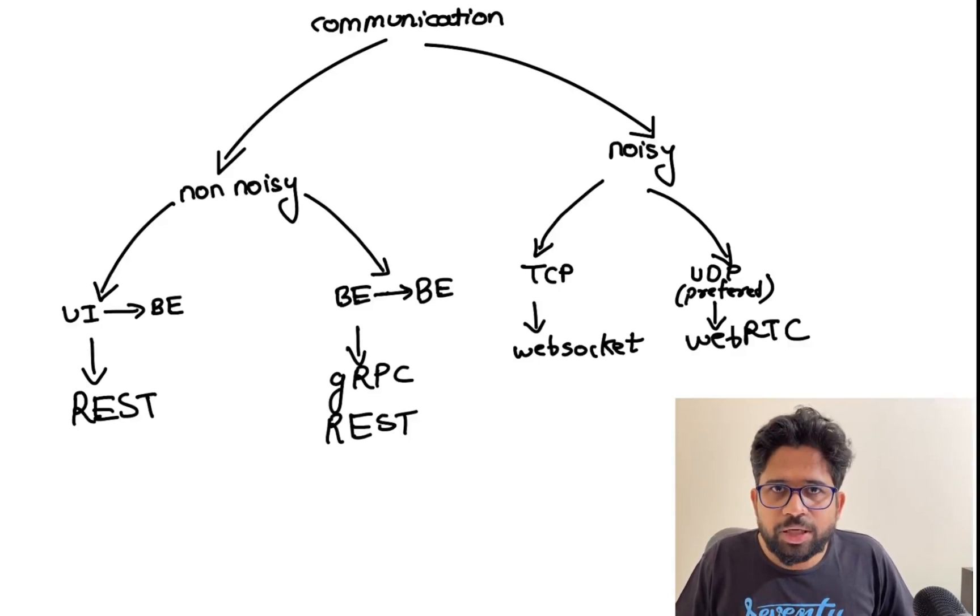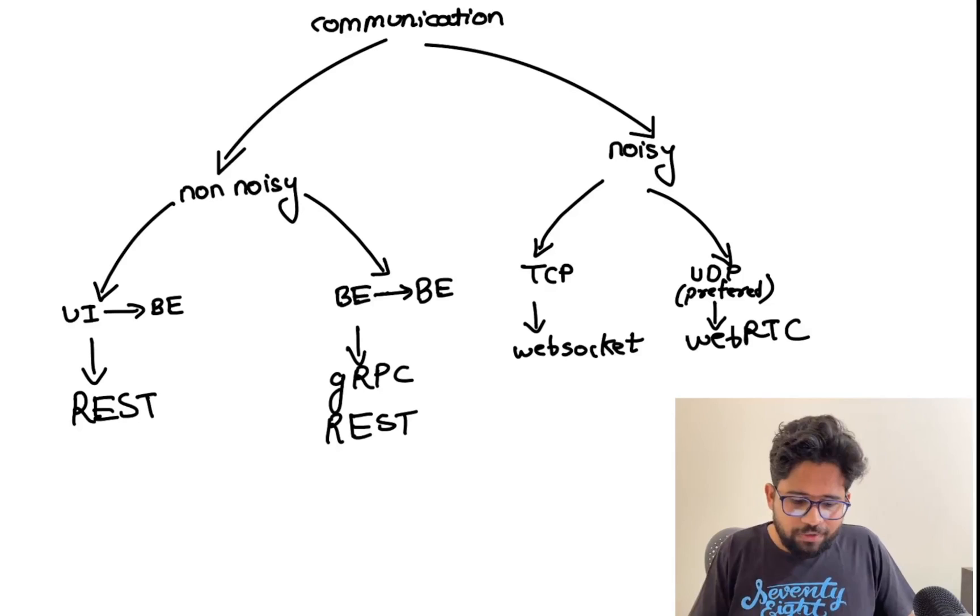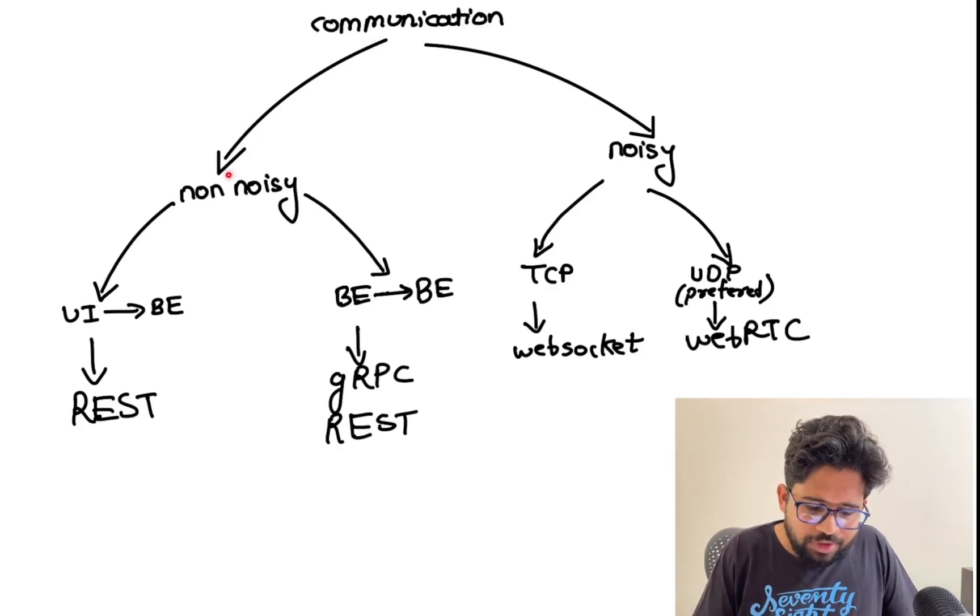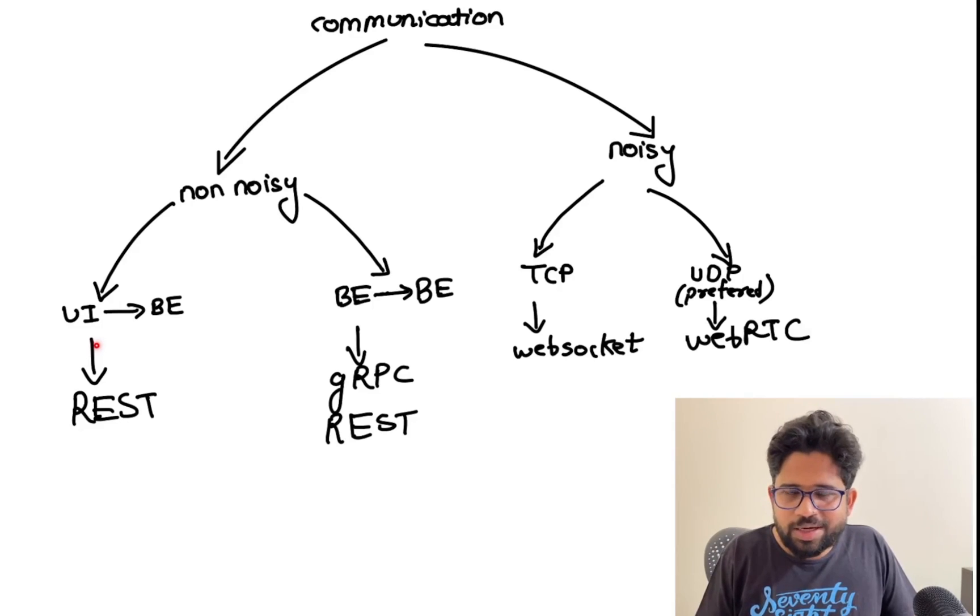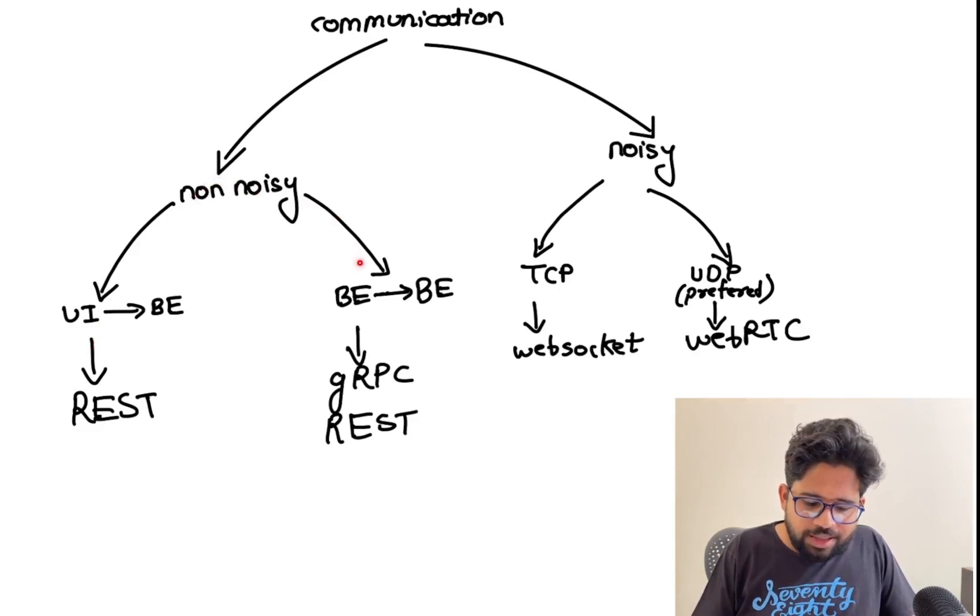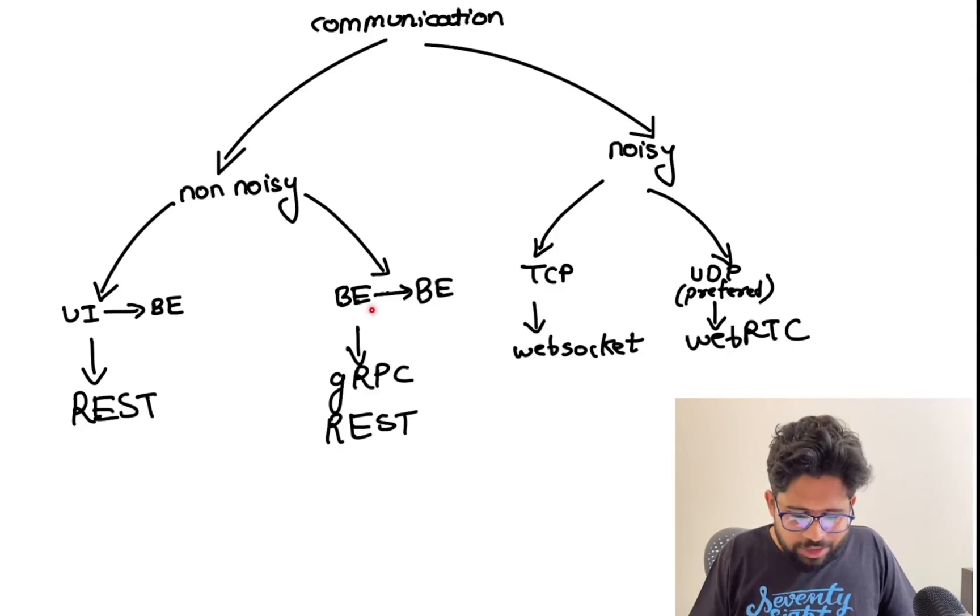This is the overall picture of what I've explained so far. If you have communication which is non-noisy—simple request and response from UI to backend—you can use REST call. All create, read, update, delete APIs in the REST call can run on top of HTTP 1, 2, or 3. 3 is QUIC. If it's a non-noisy application between service to service, you can use either gRPC or REST. REST will be easier but a little slower. Otherwise, you can use gRPC if you want faster performance.